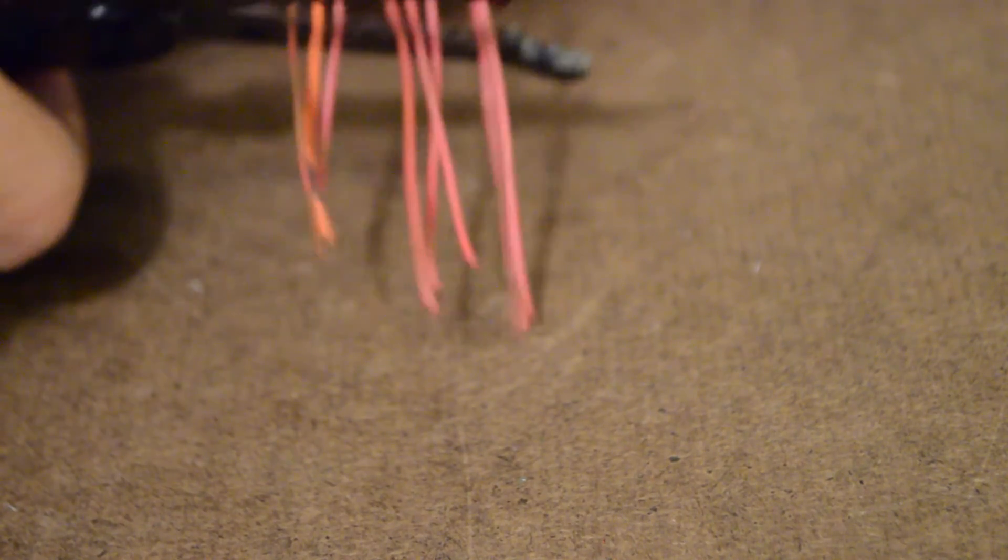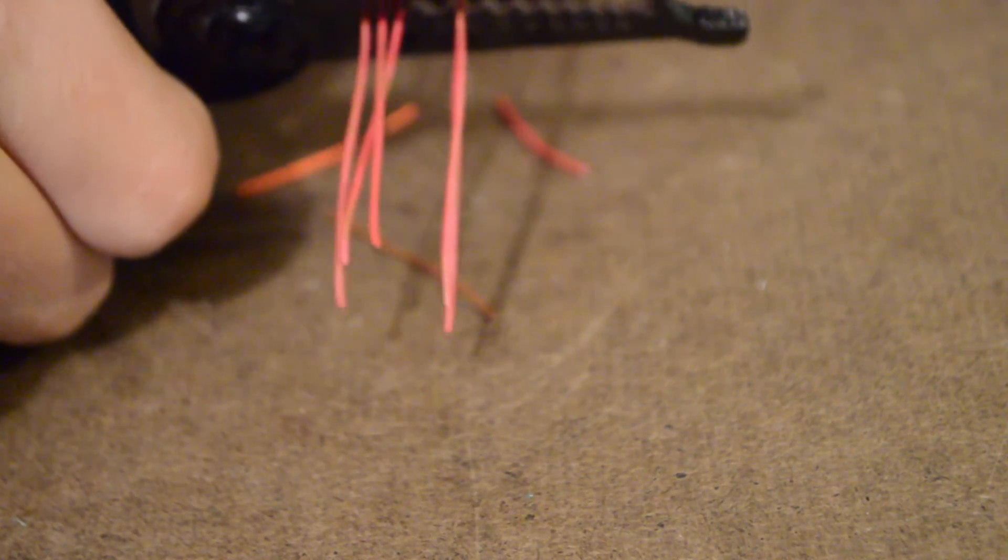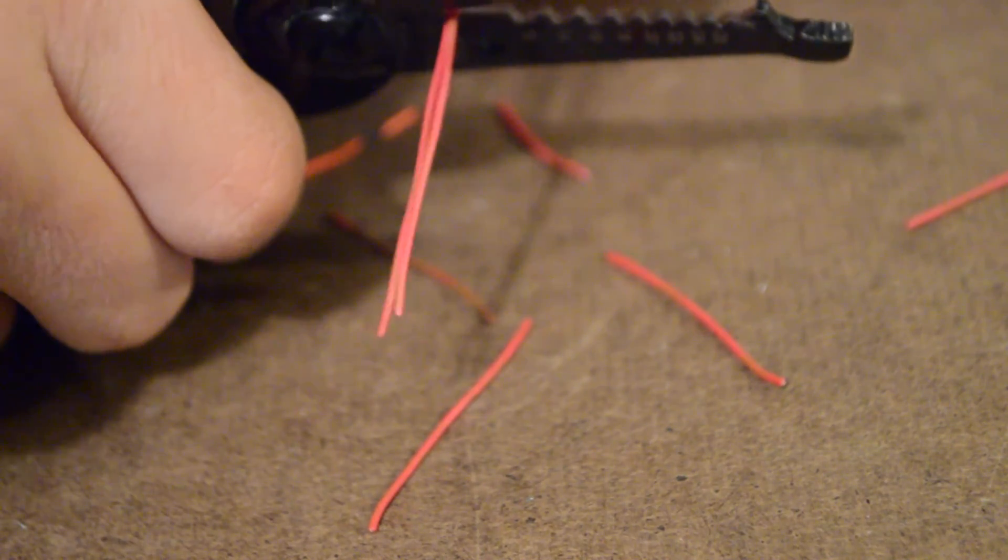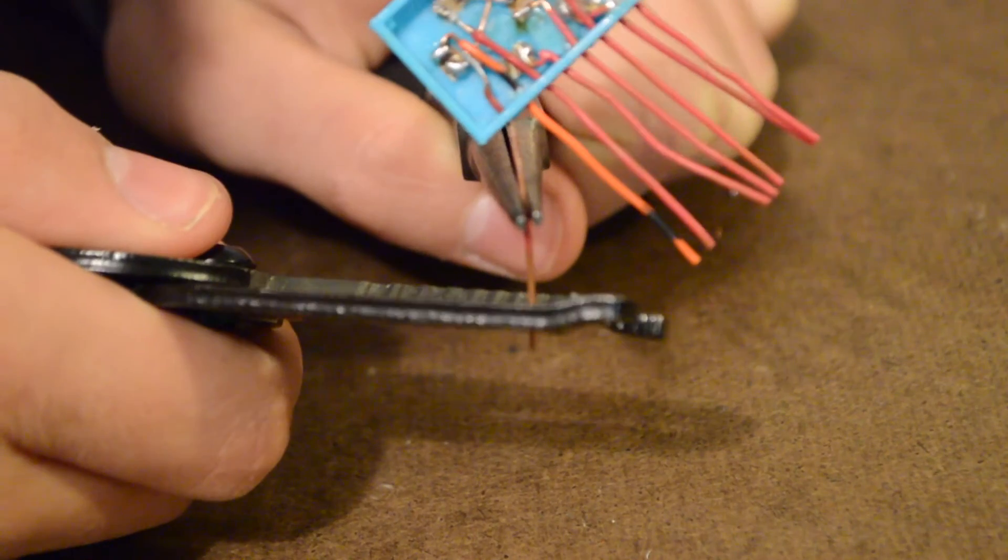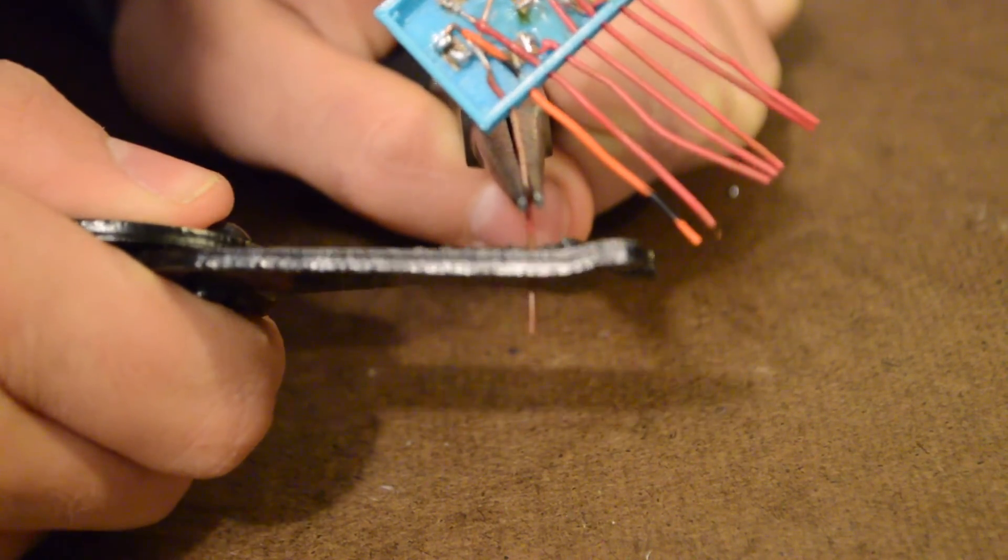Now trim all the wires to the desired length so that they line up. Strip each wire, but make sure to hold it with a pair of pliers so you don't rip the LEDs out of their places.